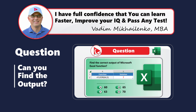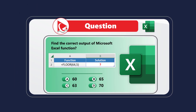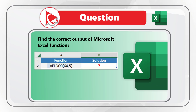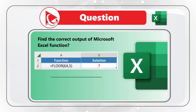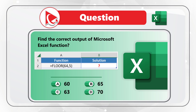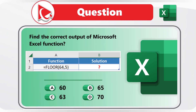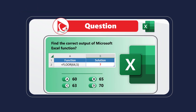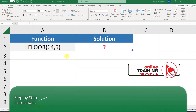Here is an amazing question we see on the test more and more often. You need to find the correct output of a Microsoft Excel function. You're presented with the statement: =FLOOR(64,5). You have four different choices: Choice A — 60, Choice B — 65, Choice C — 63, and Choice D — 70. Take a close look, refresh your memory, and see if you can select the right answer.